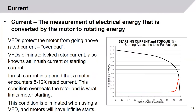Current is the measurement of electrical energy that is converted by the motor to rotating energy — the motor converts electrical current to output horsepower. VFDs protect the motor from going above its rated current or going into excess overload. VFDs eliminate lock rotor current, also known as inrush current or starting current. Inrush current is a period where a motor encounters 5 to 12 times its rated current. This condition will overheat the rotor and is what limits motor starting.